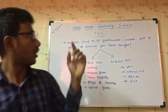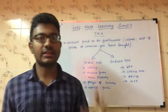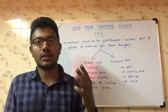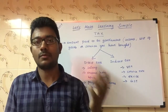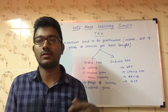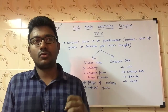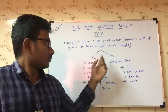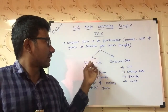Tax is an amount paid to the government. It can be in the form of income, or it can be in the form of the cost of a product that we buy from sellers. Income tax is divided into two types: direct tax and indirect tax.